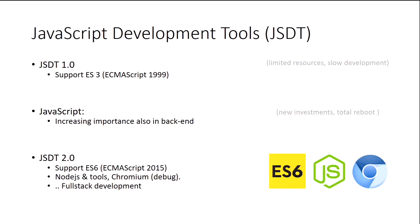The JavaScript Development Tools 1.0 were supporting standard JavaScript up to ECMAScript 3, a specification of 1999. That was good enough until 2009 or 2010, when something new came up. The increasing importance of JavaScript, also in the back-end, pushed many forces to invest more in JavaScript — forces like IBM, Red Hat, and other parties.